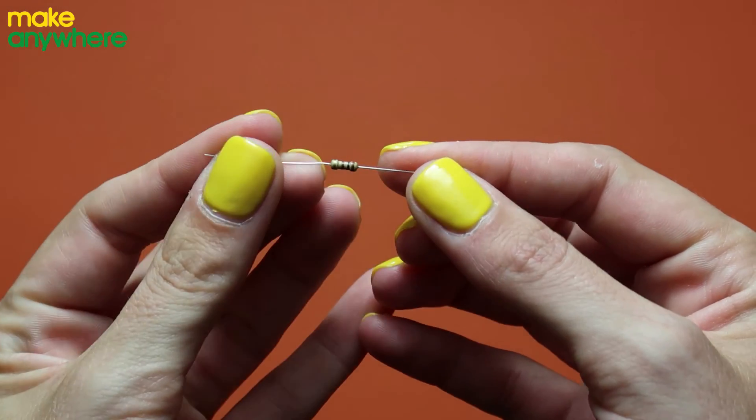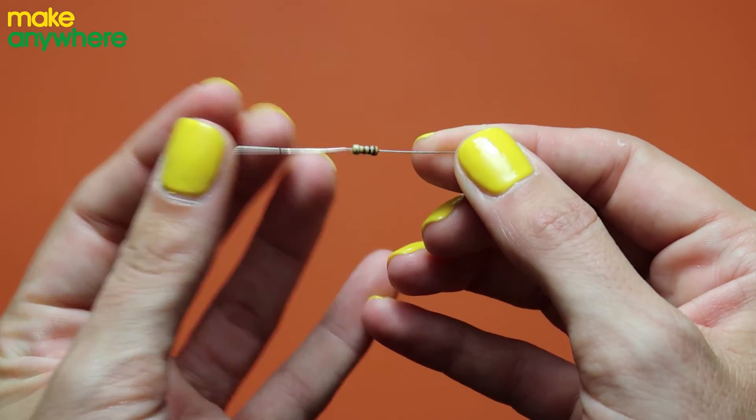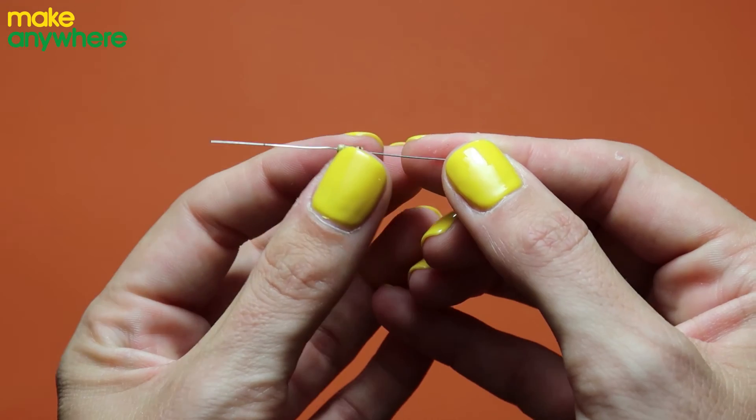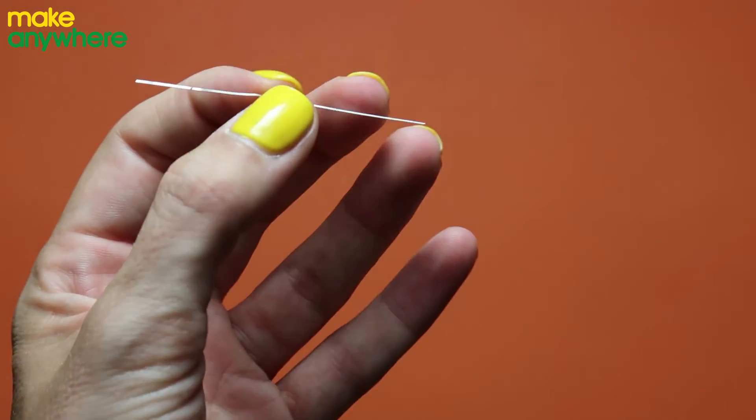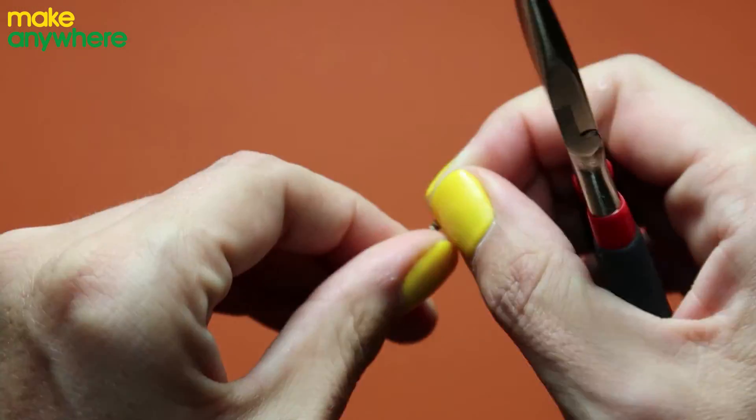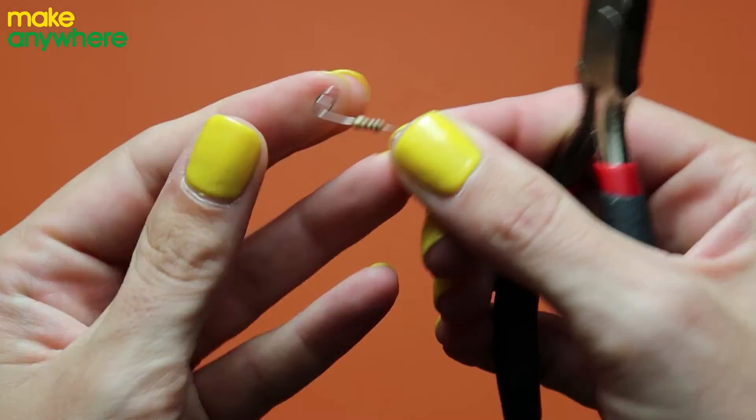Then we're going to twist the legs of the resistor. Because resistors don't have polarity or a positive and negative end we're just going to twist both of them into circles. There we go.